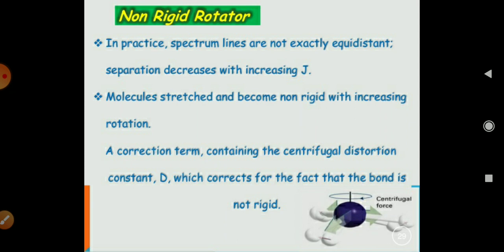The molecule is stretched and becomes non-rigid with increase in rotation. So, therefore, a correction term containing the centrifugal distortion constant, which is denoted by D and which corrects for the fact the bond is non-rigid.